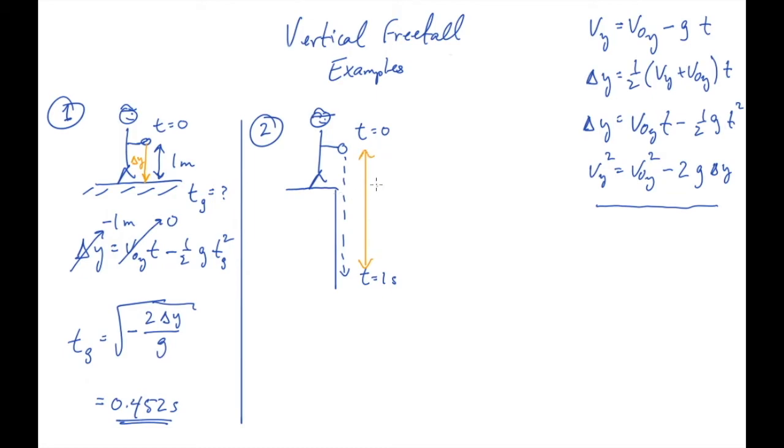I will call it h that the ball has fallen in one second. Probably easiest again to use this third equation. So let's write equation number three down. Delta y is v naught y t minus half g t squared. Alright, now this time delta y is essentially what we are looking for. Delta y is going to come out to be minus h, minus because it is going down.